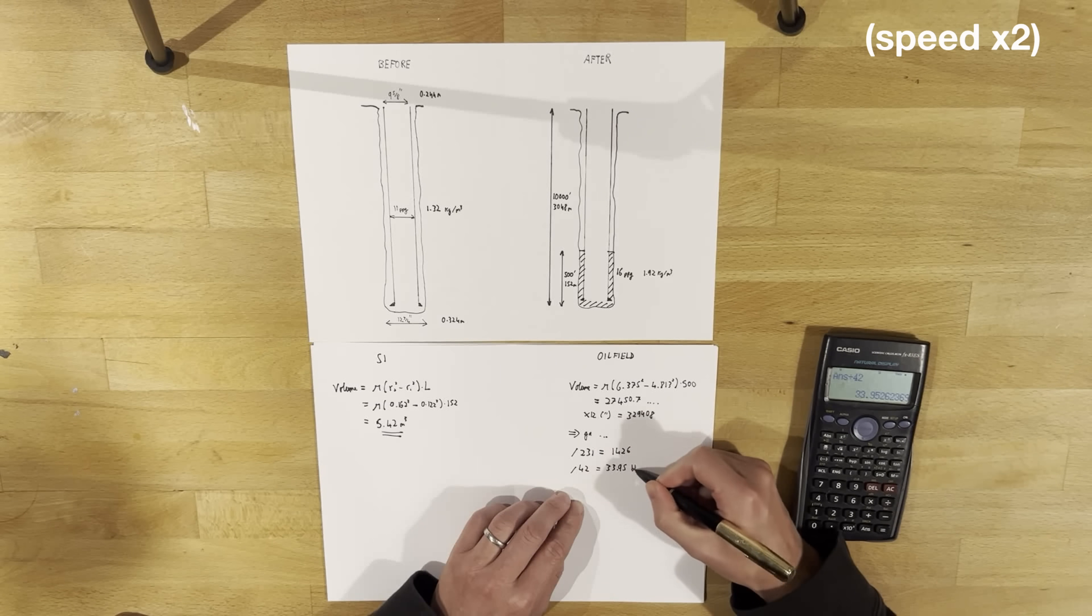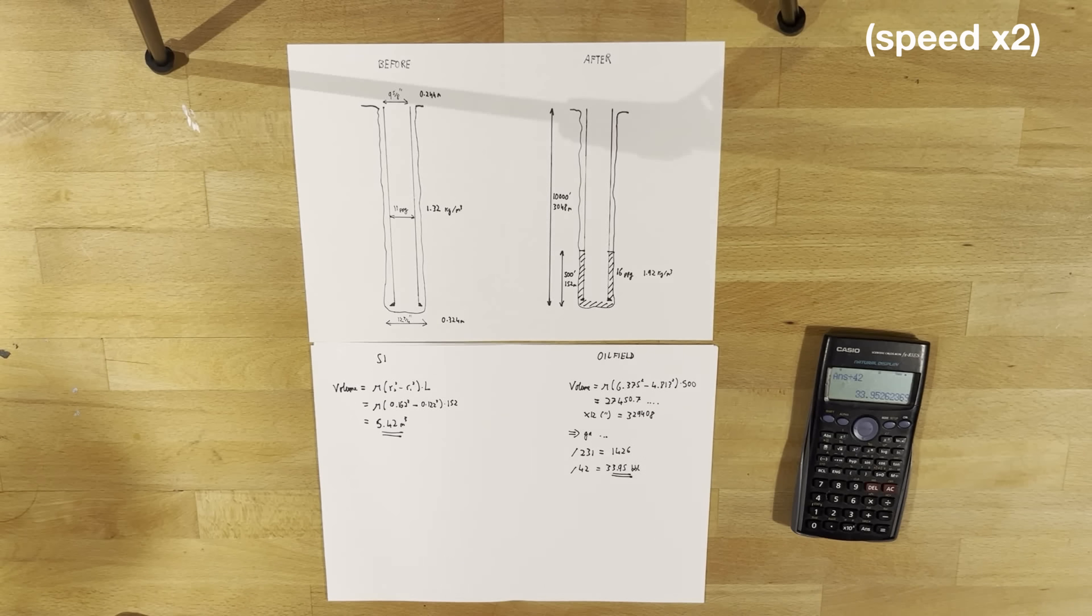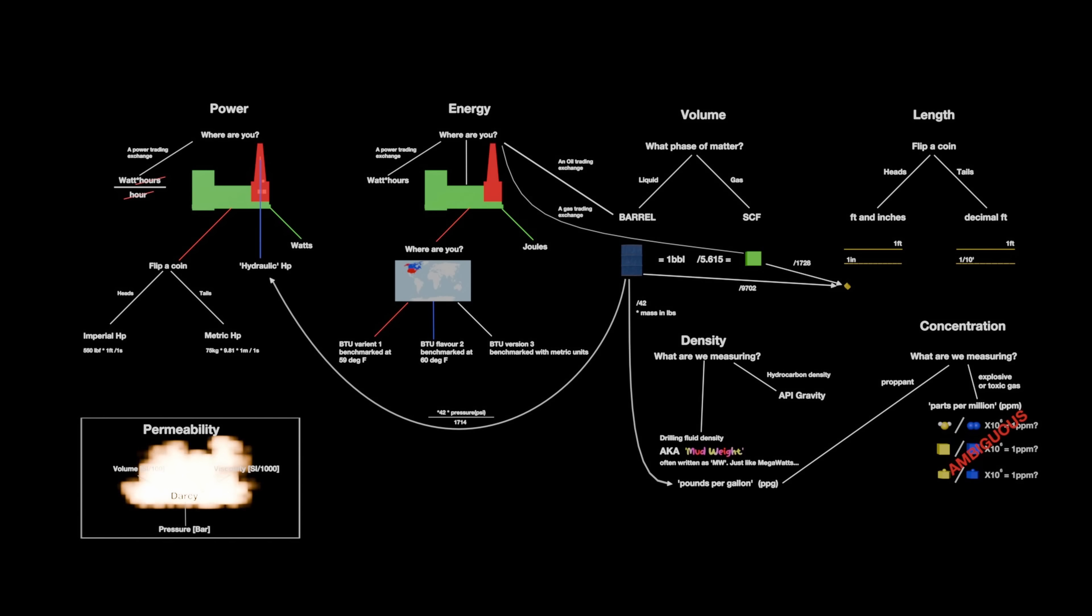Again, that was an incredibly simple calculation and it was already a hassle. Now just imagine having to keep track of which units you're using when pressure, temperature, power and density are all added to the mix. Of course, in reality nobody in the industry would write out their calculations like this. They'd have gone and got their green book and looked up the barrels per foot of 12 and 3 quarter times 9 and 5 eighths inch annulus. Thereby taking twice as long and making the calculations harder to check.